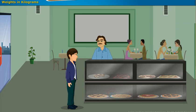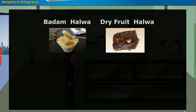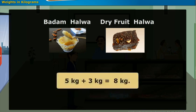He had 5 kg of badam halwa and 3 kg of dry fruit halwa. By adding these 5 kg plus 3 kg, he will get 8 kg of sweets.